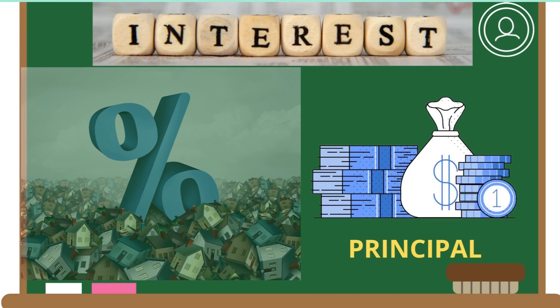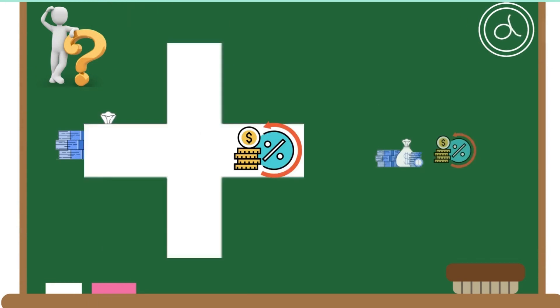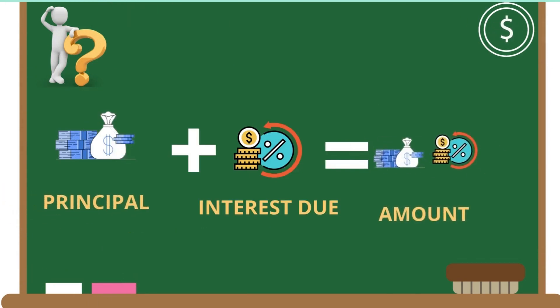Interest is the income received from invested capital, and that invested capital is called the principal. At any time after the investment of the principal, the sum of the principal and the interest due is called the amount. The interest charge is usually stated as a rate percent of the principal per year.